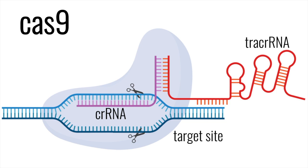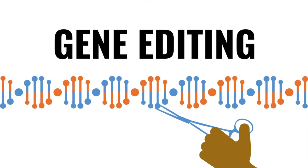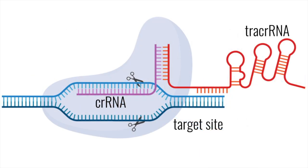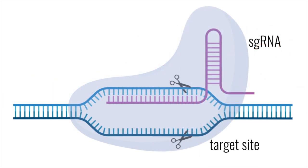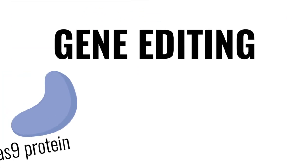The two then guide Cas9 to the target site where it will make its cut. This region of DNA is complementary to a 20 nucleotide stretch of the CRISPR RNA. For genome editing, this can be done by simply changing the nucleotide sequence of the CRISPR RNA that binds to a complementary DNA target. This system can be further simplified by fusing the CRISPR RNA and the tracer RNA to create a single guide RNA, meaning genome editing requires two major components: a guide RNA and the Cas9 protein.